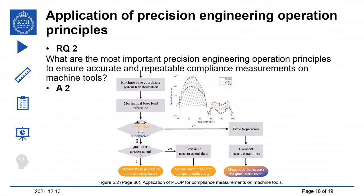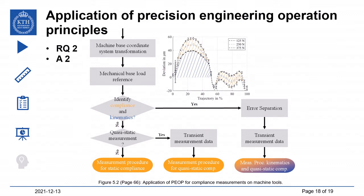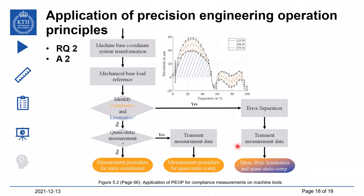Regarding the second research question — what are the most important precision engineering operation principles to ensure accurate and repeatable compliance measurements on machine tools? — I answer in Figure 5.2. Based on the work and my experience, machine-based coordinate system transformation and the mechanical baseload reference shall always be featured when measuring mechanical compliance. Whether one also needs transient measurement data depends on whether a quasi-static measurement is performed. If one wants to identify compliance as well as kinematics simultaneously, then error separation must also be considered on top of transient measurement data.